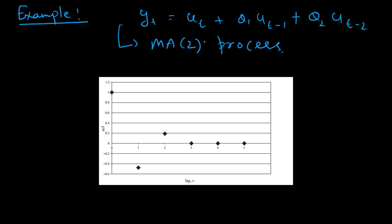Let us take an example. This is a typical MA2 process: YT is represented as UT plus theta_1 times UT minus 1 plus theta_2 times UT minus 2. You might wonder about the constant term — this is an intercept-less representation of the model, which does not make much of a difference. So this is an MA2 process, with one lag and a second lag.